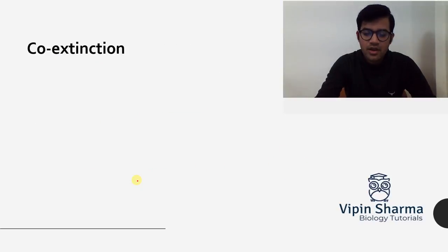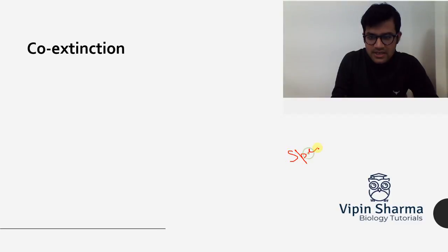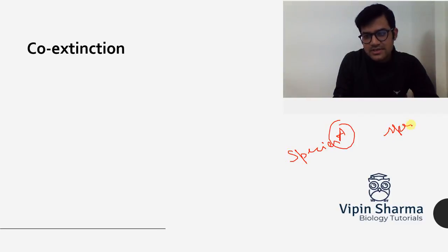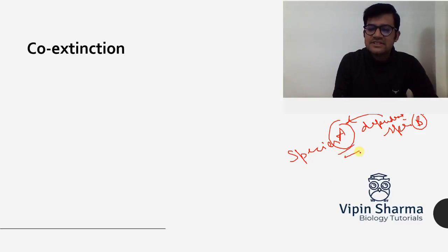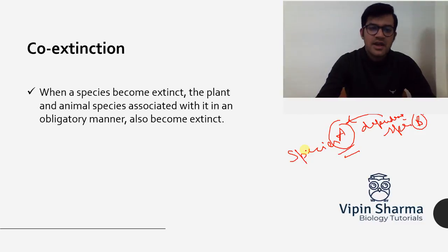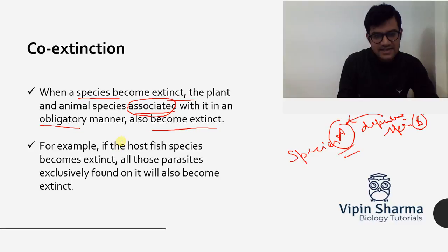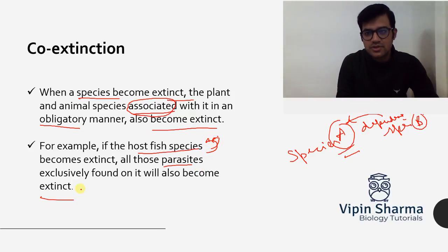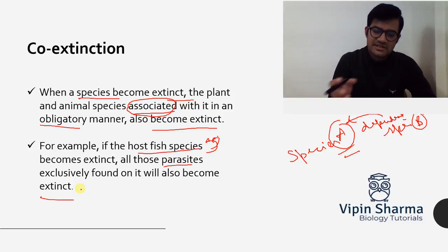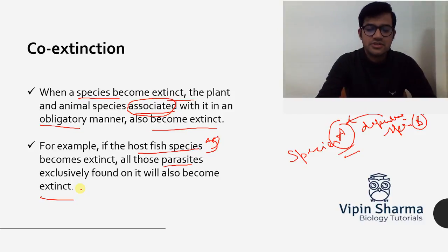The final cause is co-extinction. If species A exists and species B is dependent on species A, when species A undergoes extinction, the survival of species B will also be affected. Co-extinction means when one species becomes extinct, the plants and animals associated with it in an obligatory manner also become extinct. For example, if a host fish dies, the parasites that used to survive on it will also become extinct — if one goes extinct, the other dependent species must also go extinct.